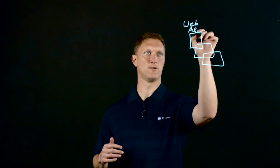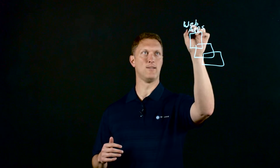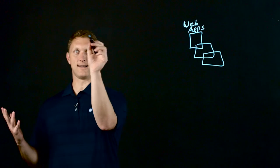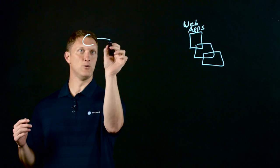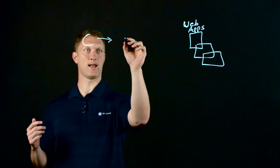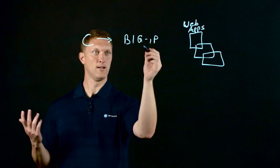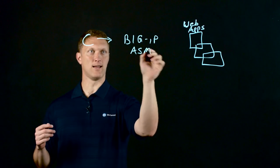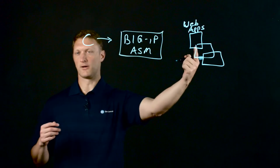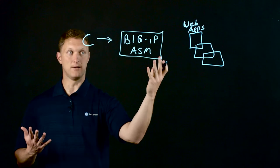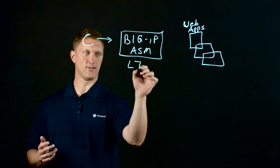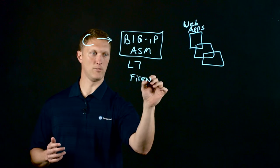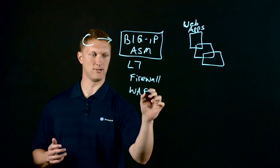So let's start off. We all know that applications are king out there today. Everybody's got web applications, so I'm just going to draw a few of them right here. These are your web applications — web apps — and these are the things that we want to protect. You've got clients out here in the big crazy internet who want to come in and access your web applications. You're going to put a BIG-IP in front of your applications to protect them. In this case, we'll say the ASM. As a client comes to request your web application, they're going to go through the BIG-IP ASM, and what this is is a layer seven firewall, or what we also sometimes call a WAF — a web application firewall.